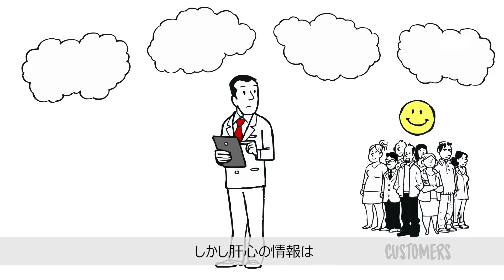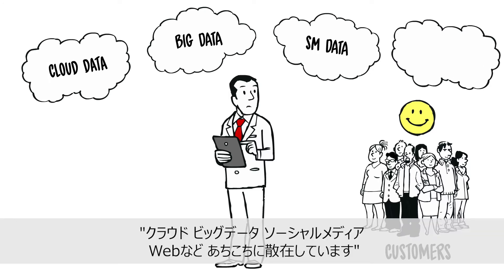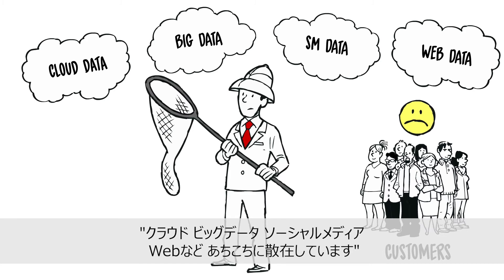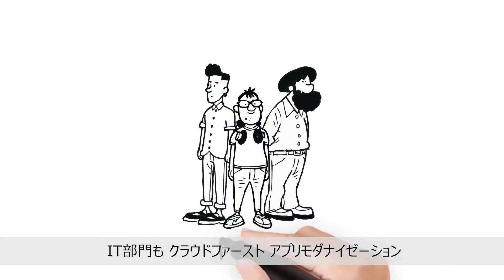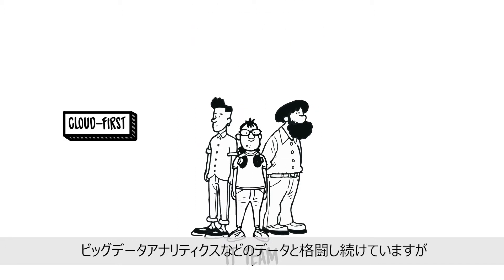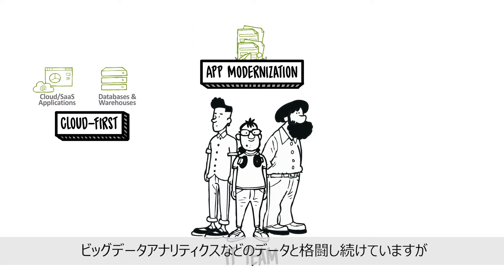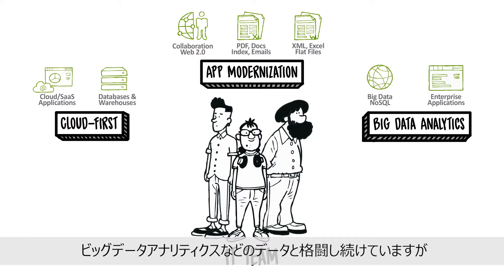But your data is all over the place — cloud data, big data, social media data and web data, to name a few. Your IT teams continuously struggle with new sources of data constantly being added through new initiatives, such as Cloud First, App Modernisation, Big Data Analytics and more.